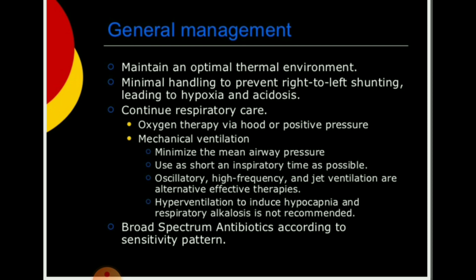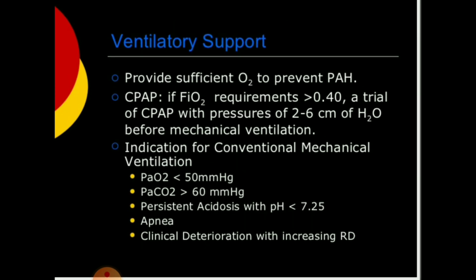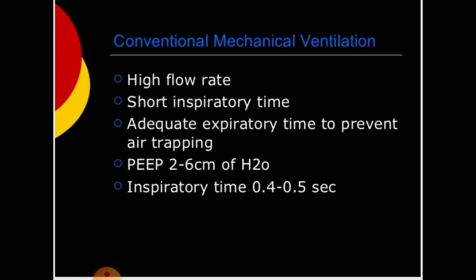Broad-spectrum antibiotics should be given according to sensitivity patterns. For ventilatory support, provide sufficient oxygen to prevent PAH. CPAP is indicated if FiO2 requirements exceed 0.4, using pressure of 2 to 6 cmH2O before mechanical ventilation. Indications for conventional mechanical ventilation: PaO2 less than 50 mmHg, PaCO2 more than 60 mmHg, persistent acidosis with pH less than 7.25, apnea, and clinical deterioration with increasing respiratory distress.